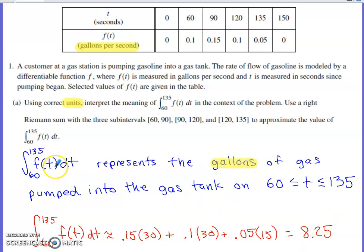The units here are going to be gallons. The reason why, this right here has units of gallons per second. The differential actually has units of seconds. So taking the product of those allows the units of seconds to cancel. So our end units would be gallons.